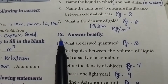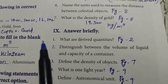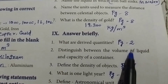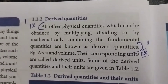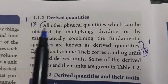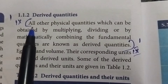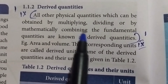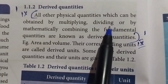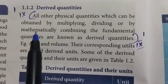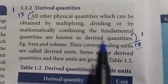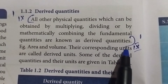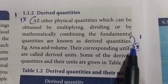Next, Roman Letter 9: Answer briefly. First one: What are derived quantities? Take page number 2. Derived quantities: All other physical quantities which can be obtained by multiplying, dividing, or by mathematically combining the fundamental quantities are known as derived quantities.